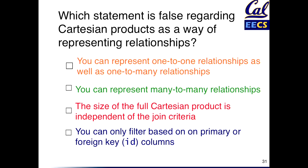So before we do a code example, here's a question about Cartesian products. Which statement is false about the way you can use them to represent data relationships? Can you represent one-to-one relationships as well as one-to-many? Can you represent many-to-many, which we didn't show in our example? Is the size of the full Cartesian product independent of the joining criteria? Or can you only filter based on the primary or foreign key columns — namely the ones that have ID as part of the column name? Think about that for a moment and then we'll do a vote.